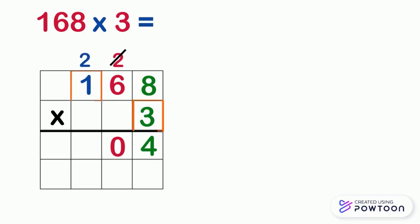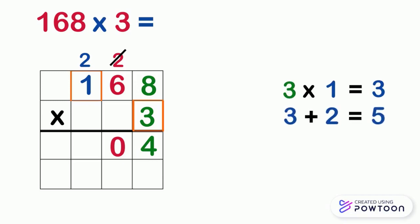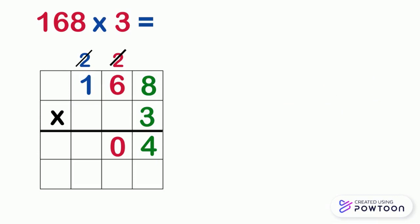Now we will multiply 3 by the 100's digit, which is 1. 3 times 1 equals 3. Then add the 2 that we carried. It gives us 5. Don't forget to cross the carry. Then we will write 5 in the 100's place in the answer box. So 168 times 3 equals 504, and our multiplication problem is done.